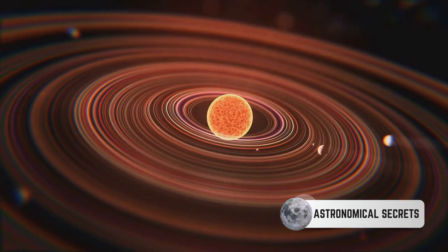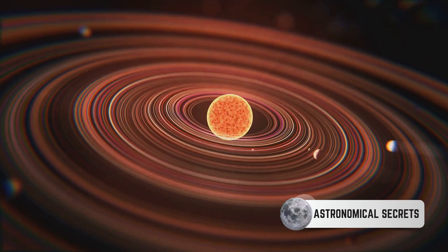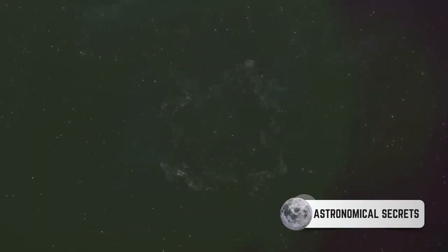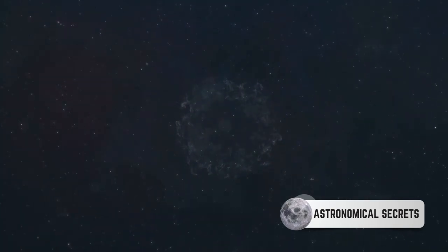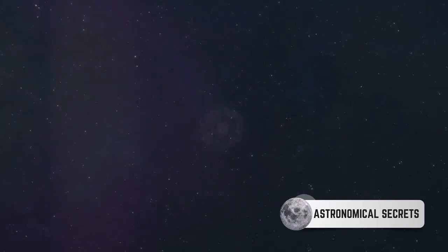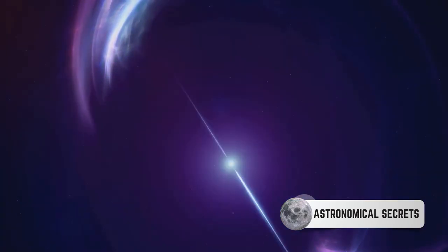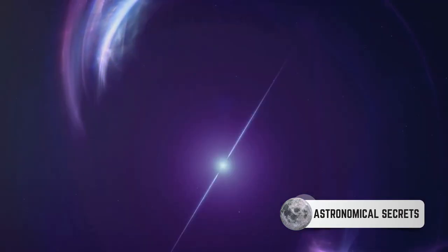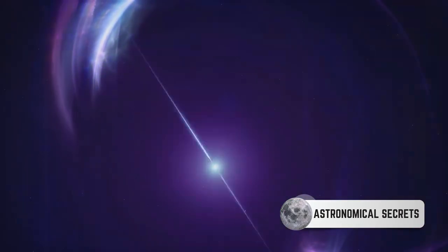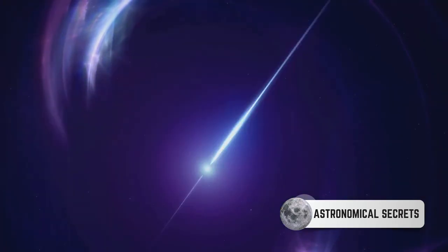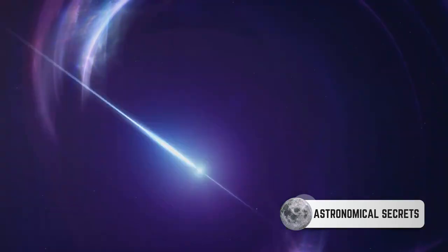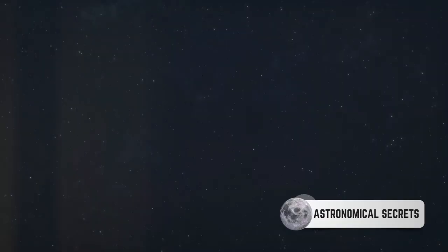Finally, the star reaches its end. For smaller stars like our sun, they shed their outer layers, leaving behind a dense core known as a white dwarf. This white dwarf will cool over billions of years, fading into a black dwarf. For larger stars though, their death is more dramatic. The core collapses under its own gravity, triggering a supernova explosion. What remains can be a neutron star or, in the case of the most massive stars, a black hole.